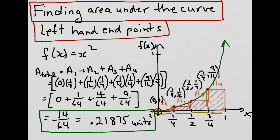If we wanted to get a better approximation of the area under the curve, we would reduce the width of the rectangles — in other words, we'd increase the number of subintervals. And the best approximation would occur when the limit of the width of the rectangles approaches 0.